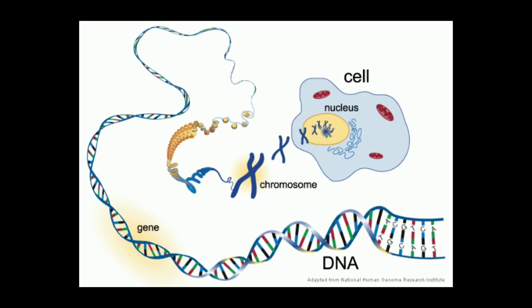This picture shows us the cell. Inside the cell, we have the nucleus; inside the nucleus, we have the chromatin material; inside the chromatin material, we have the DNA. The DNA is also called the blueprint of our body.